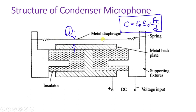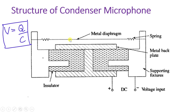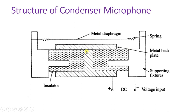As D decreases, C will increase; and as D increases, C will decrease. Since voltage V = Q/C and Q is constant, if C decreases, V will increase — and that is how the electrical signal is generated. An insulator is present to insulate the body from the plate. A constant DC voltage is applied to the plate, and the electrical signal is taken from the metal diaphragm, which is directly proportional to the sound signal.